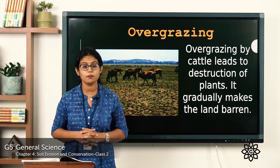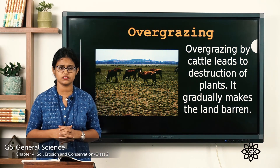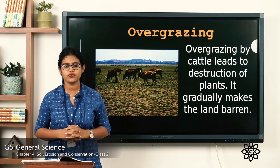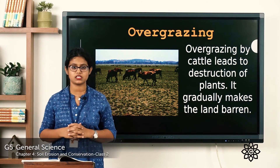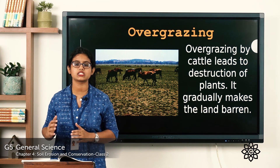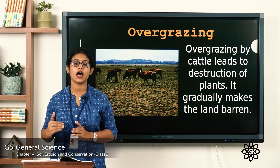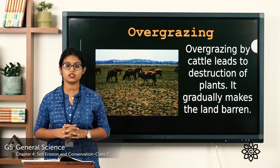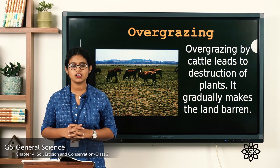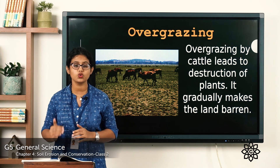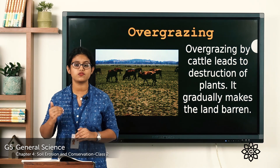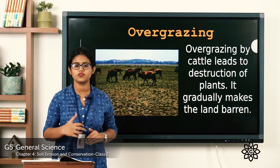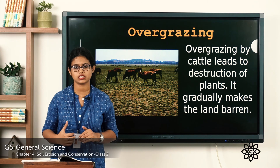Moving to page number 48, there are two questions. First: the topmost layer of the soil is fertile — the topmost layer is the fertile soil where plants grow. Second: soil erosion makes the soil less fertile, because as the top layer of soil is washed away, the fertility of the soil decreases.